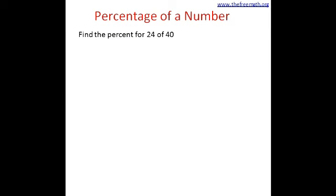When it says 24 of 40, that means 24 out of 40. Suppose in some exam I got 24 marks out of 40 marks — what is the percentage of my marks? That means 24 out of 40 is equal to how much out of 100, since percentage is always out of 100. Let's write this in terms of fractions: 24 over 40 is equal to what over 100. That unknown value will give us the percentage.